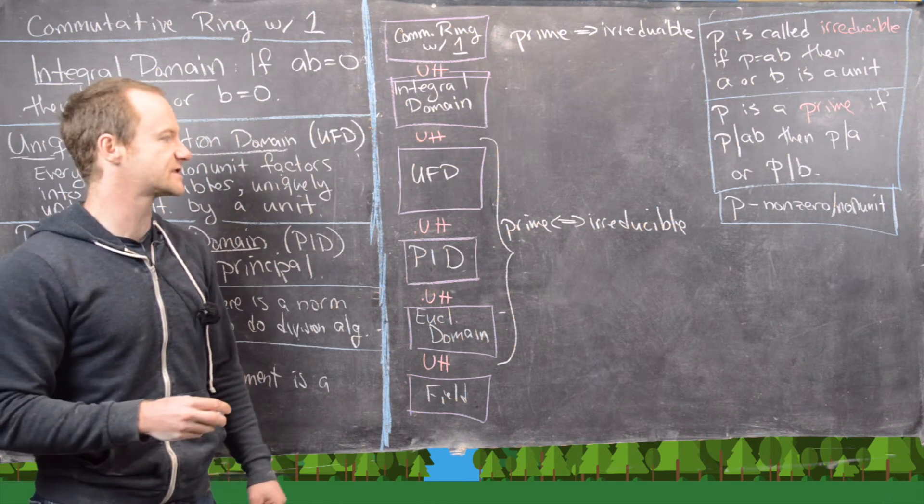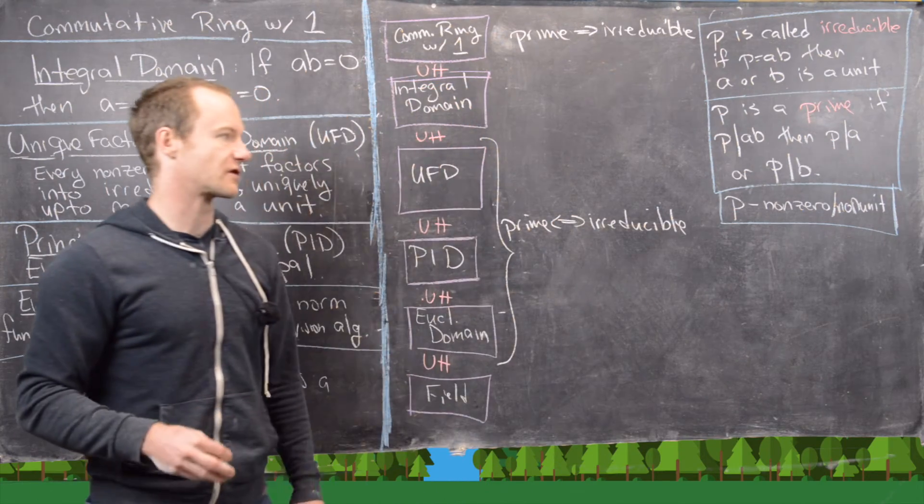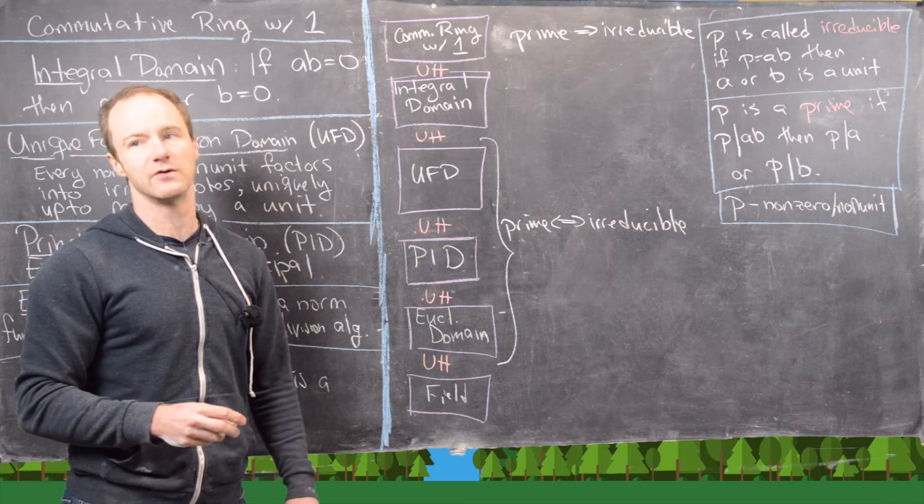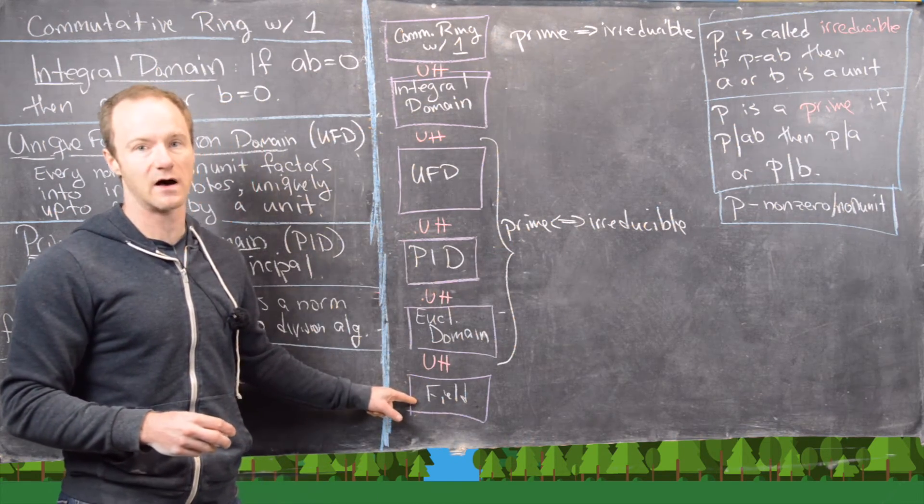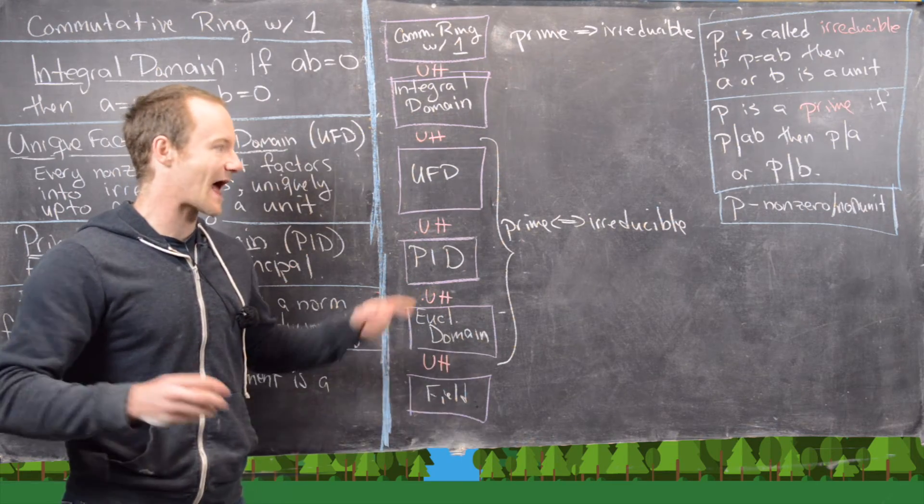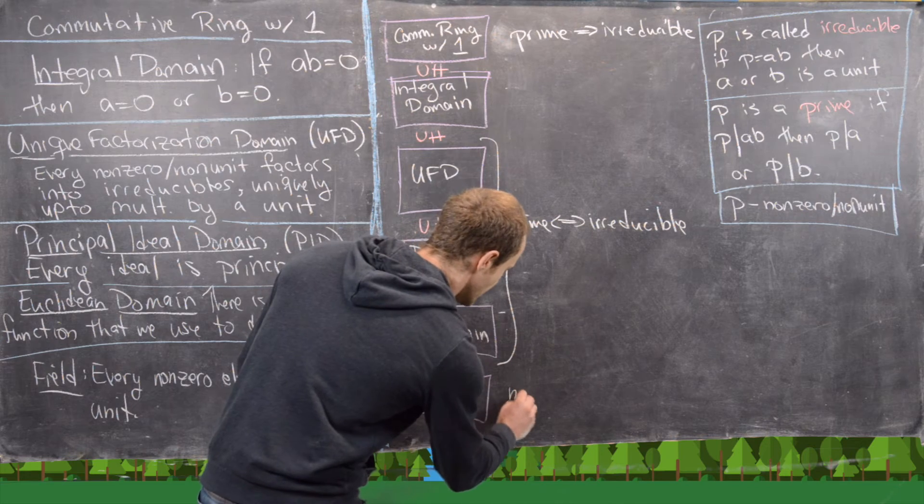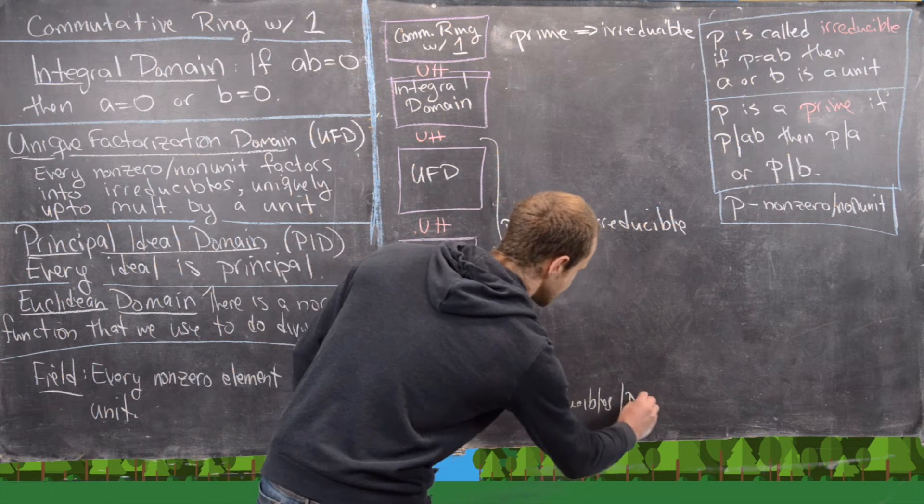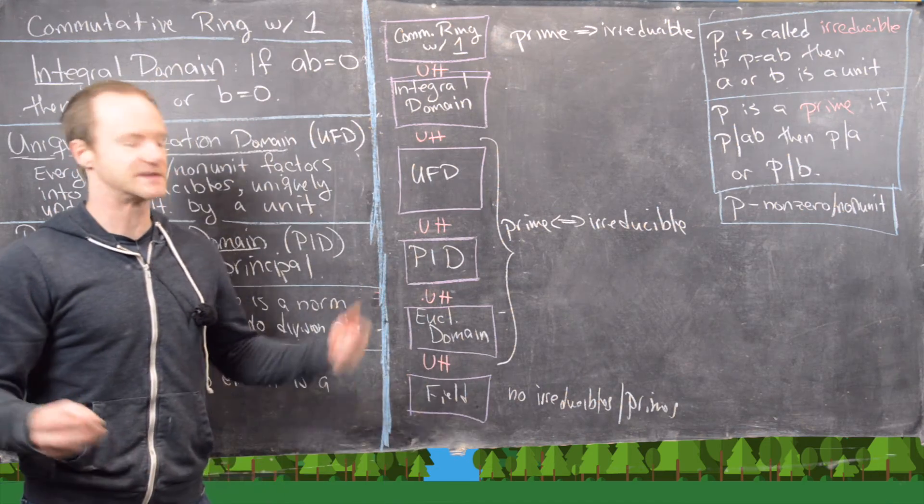And you might say, well, what about for fields? Well notice, in order to be an irreducible or a prime, you have to be a non-zero and non-unit element. So this is actually true for fields as well. It's just that fields don't have any irreducibles or any primes. So there are no irreducibles or primes in fields. And that's because everything is a unit or the zero element.